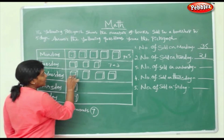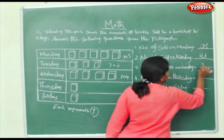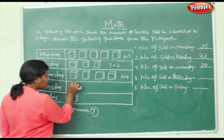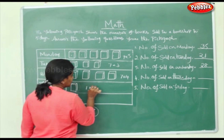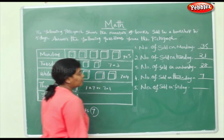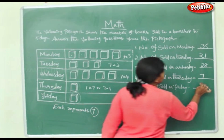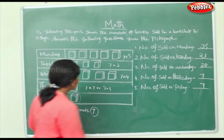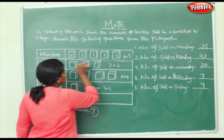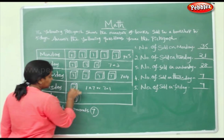On Wednesday: 1, 2, 3, 4 books — 7 into 4 equals 28. Number of books sold on Thursday: only one bundle, which means 7 into 1, just 7. Number of books sold on Friday: only one book, so 7. Each book represents 7, so every symbol counts as 7.